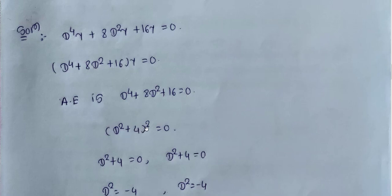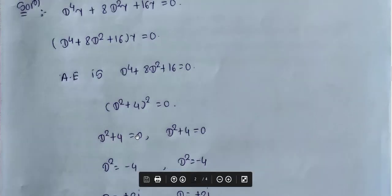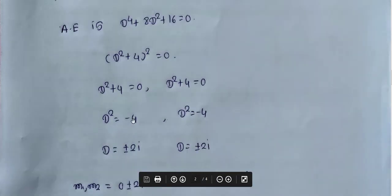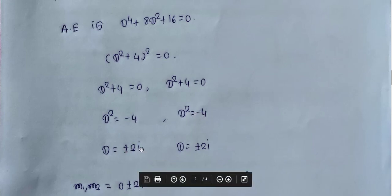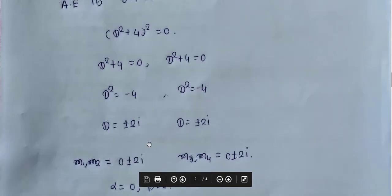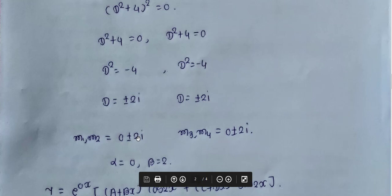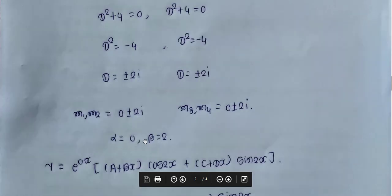We factor the auxiliary equation as (d² + 4)² = 0. This gives d² + 4 = 0 and d² + 4 = 0, so d² = -4, meaning d = ±2i. Therefore m1, m2 = 0 ± 2i and m3, m4 = 0 ± 2i — two equal pairs of complex roots with α = 0 and β = 2.